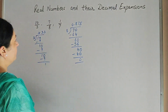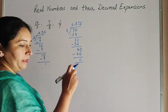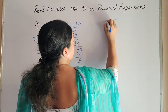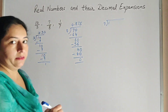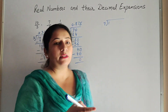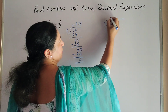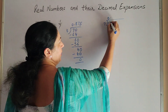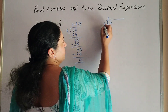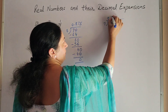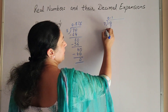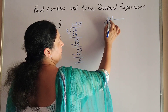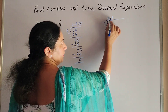Now we move to the next number: 1/7. 1 divided by 7. We change it into decimal form. Since 1 is less than 7, we put a decimal point — 0 point. When we put the decimal we add 0. Now 10 divided by 7: 7 ones are 7, 10 minus 7 gives 3. We add 0 since we already placed the decimal.